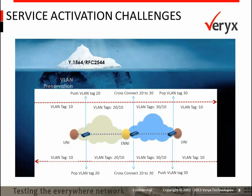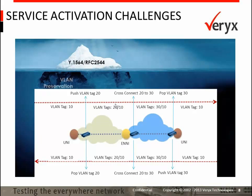Firstly, VLAN preservation. Let us quickly see how VLAN preservation issues are prone to happen. If you see this example, VLAN 10 is the customer VLAN that needs to be preserved end-to-end, between UNI and UNI. As you can see, the service involves multiple operators. Each operator's network will be subject to handling overlapping VLANs. Hence, the carrier switches are generally configured to stack their own VLAN on top of the customer VLAN to ensure traffic separation between customers.